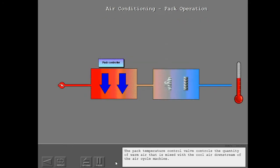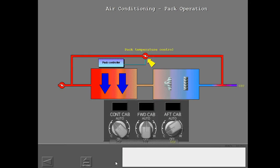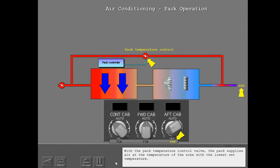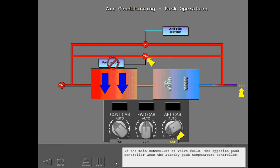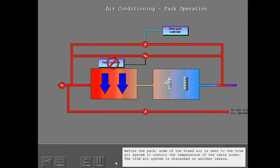The pack temperature control valve controls the quantity of warm air that is mixed with the cool air downstream of the air cycle machine. With the pack temperature control valve, the pack supplies air at the temperature of the zone with the lowest set temperature. If the main controller or valve fails, the opposite pack controller uses the standby pack temperature controller. Before the pack, some of the bleed air is sent to the trim air system to control the temperature of the cabin zones.